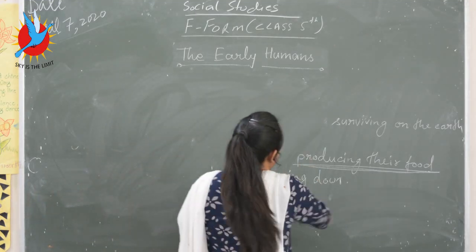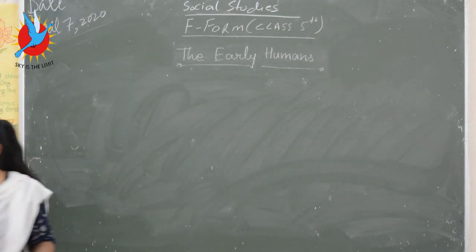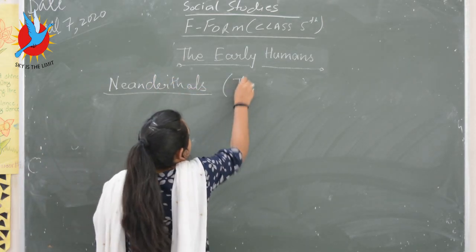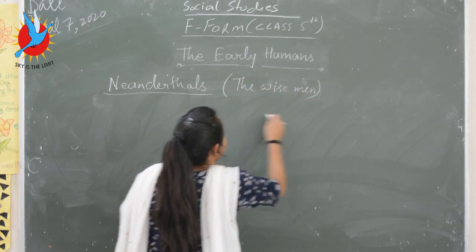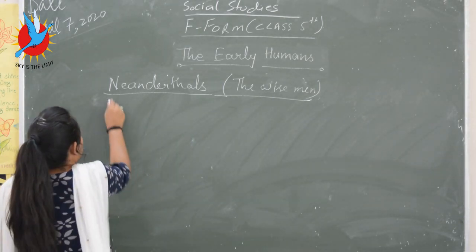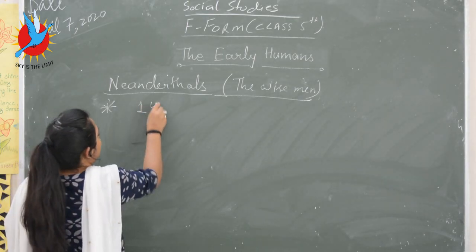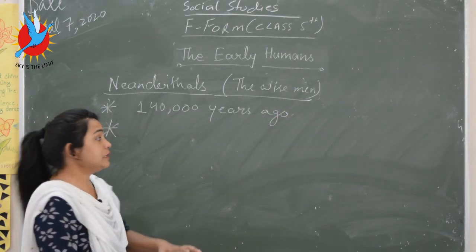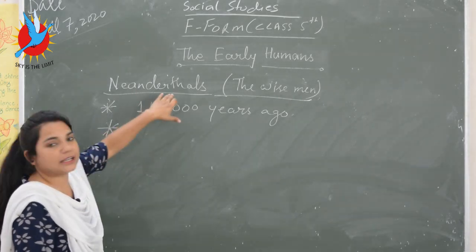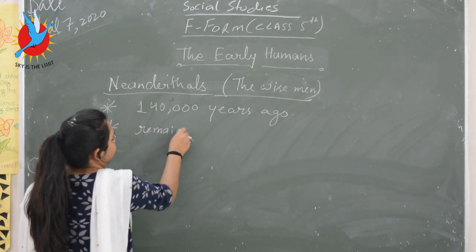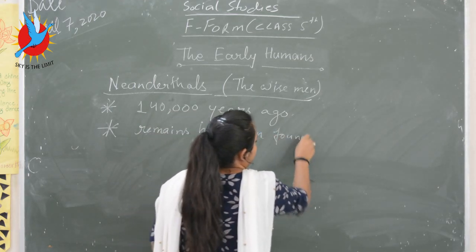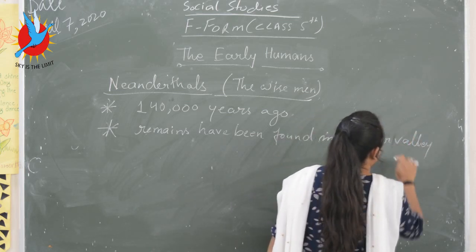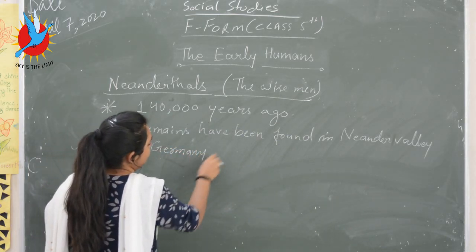Now we are going to discuss Neanderthals. Their other name was the 'Wise Men.' They lived on this earth one lakh forty thousand years ago. Their remains have been found in Neander Valley, Germany, and that is why they got the name Neanderthals.